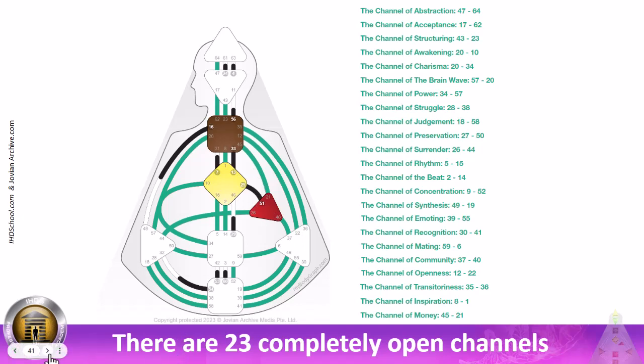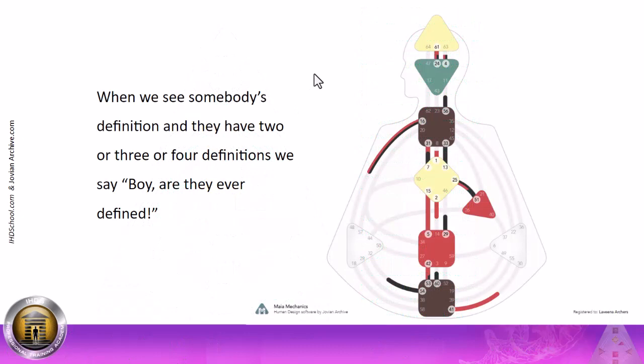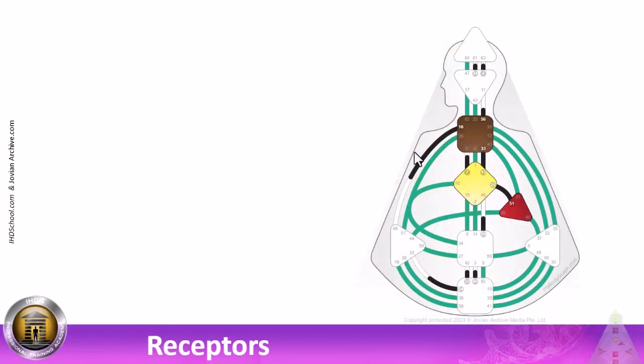What happens when we see somebody's definition and they have, let's see, three or four definitions. This one has a ton. Boy, are they ever defined. Not to the mind, anyway. So we look at this personality, how the personality has got to deal with 23 open channels. 23 receptor fields.